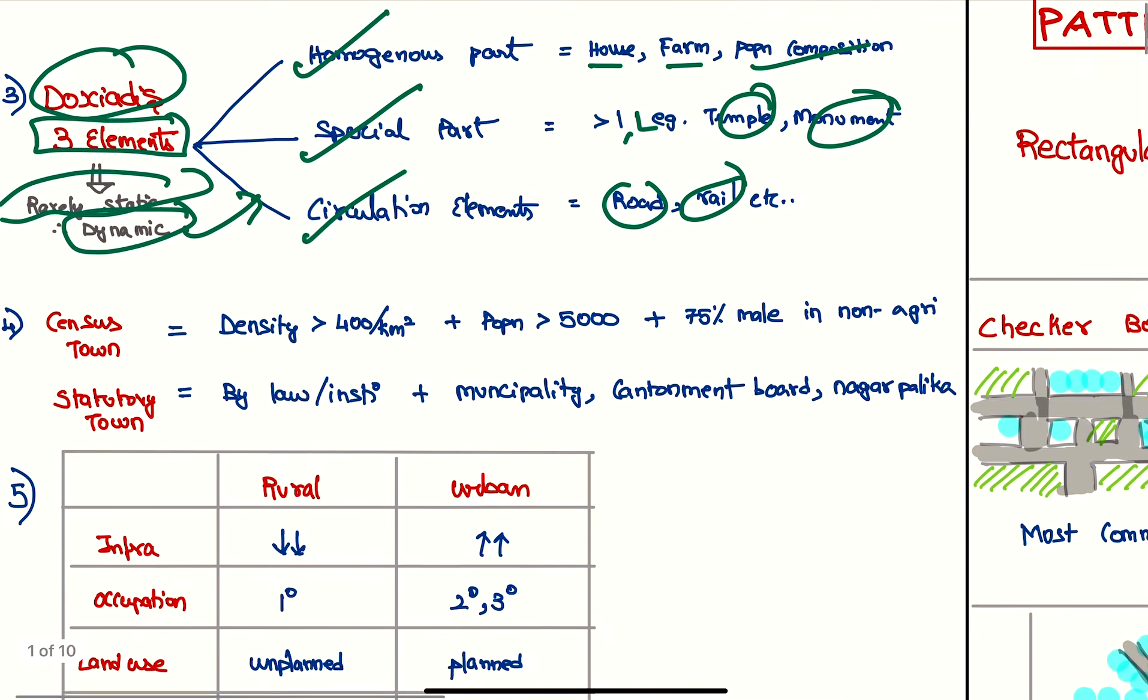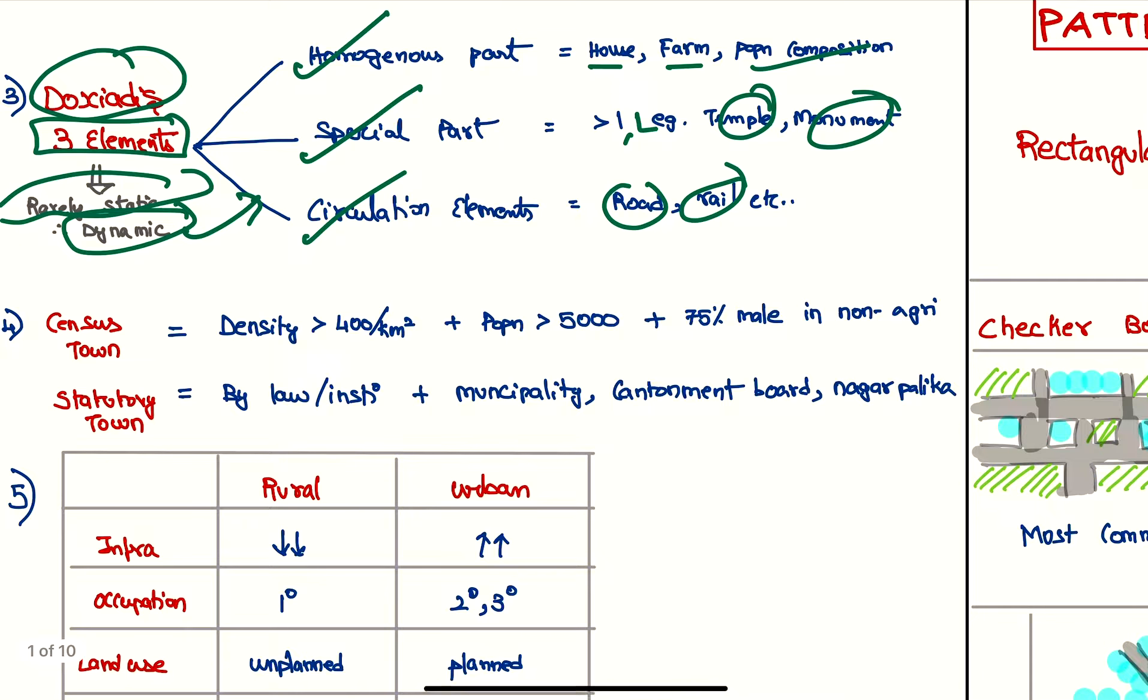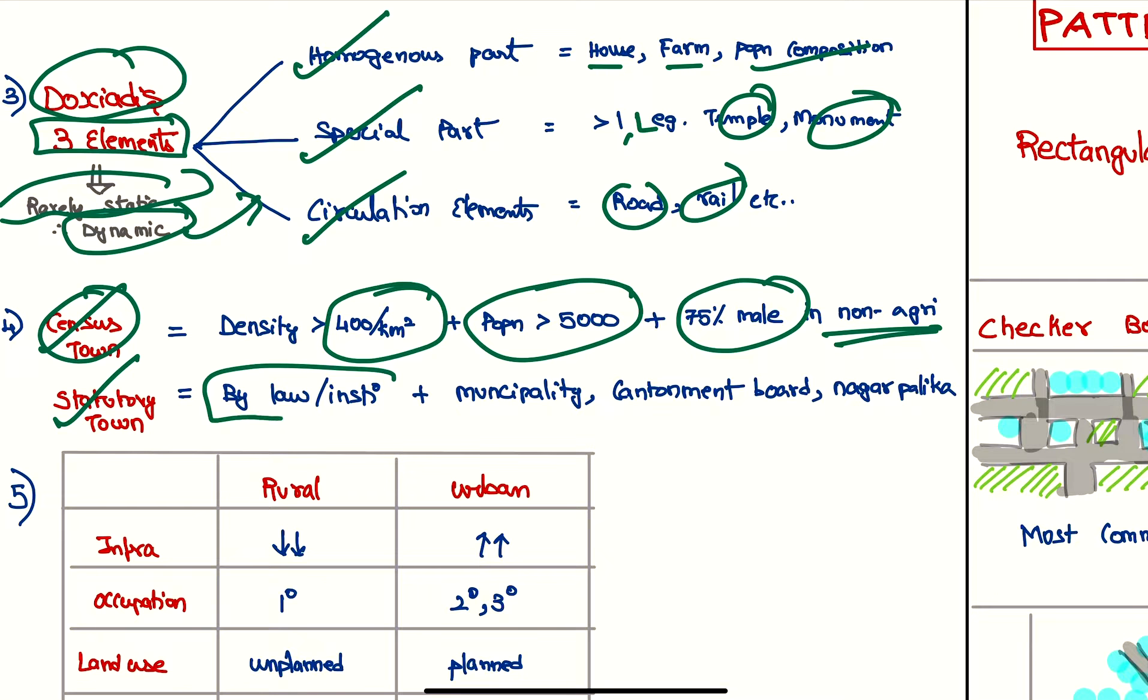Next we have types of settlements. First type is based on census town or statutory town. A census town has a density greater than 400 persons per square kilometer, population greater than 5,000, and 75 percent of the males are in non-agricultural activities. The statutory town is called so because it is said so by a law or an institution, for example a municipality, cantonment board, or nagar palika.